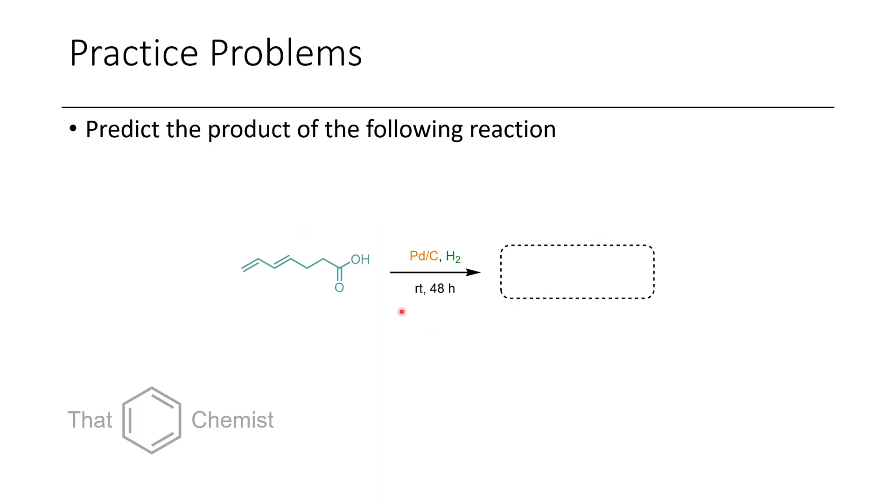Now in the final problem, I asked you to show the product of the following reaction. We have palladium on carbon, we have hydrogen gas, and it's at room temp for 48 hours. Now in this case, because we have two alkenes and we're using an excess of hydrogen in the presence of a palladium catalyst, both of them should be reduced to the saturated fatty acid product.